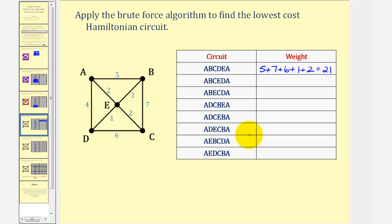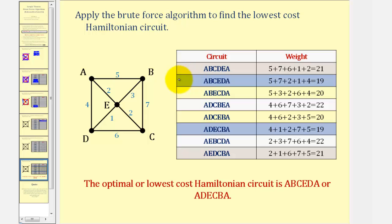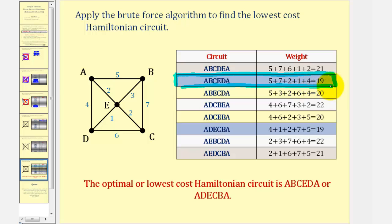Now we would do the same for the remaining Hamiltonian circuits, which to save some time I've already done. Notice how several of the circuits have the same weight, which makes it easier to identify the duplicate circuits. For example, notice the circuits with total weight of nineteen are duplicates: A, B, C, E, D, A is the same circuit in reverse order as A, D, E, C, B, A. The same is true for the two circuits with a total weight of twenty-one, the two with twenty, and the two with twenty-two. We're looking for the lowest cost Hamiltonian circuit, which would have a total weight of nineteen — represented by these two duplicate circuits.